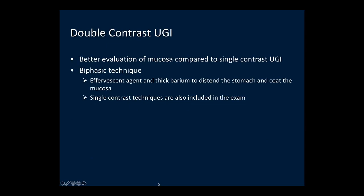The double contrast upper GI is a better evaluation of the gastric mucosa. It is a biphasic technique. The first phase involves administering an effervescent agent and thick barium to distend the stomach and coat the mucosa. This is followed by a single contrast exam. Thin barium is favored for other gastric pathologies such as hiatal hernia evaluation.